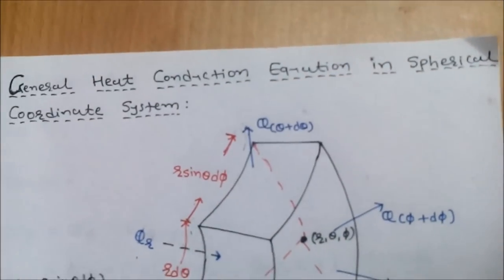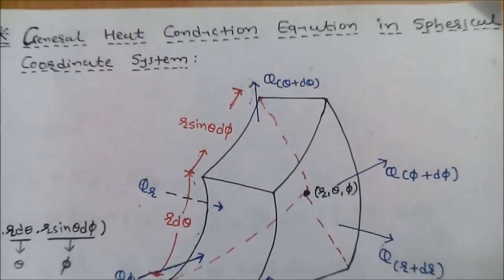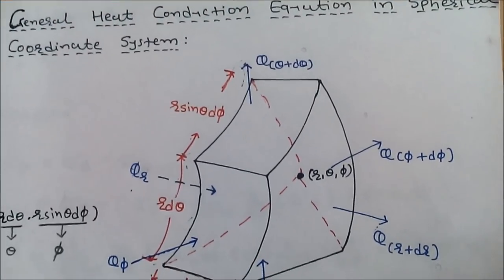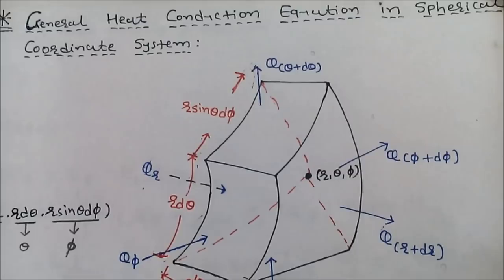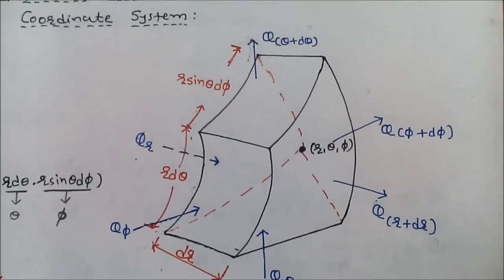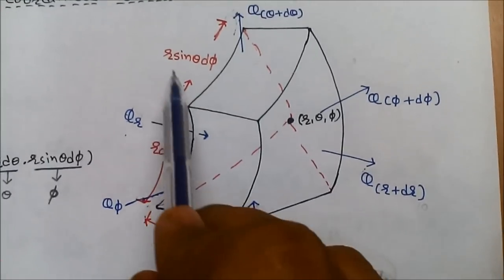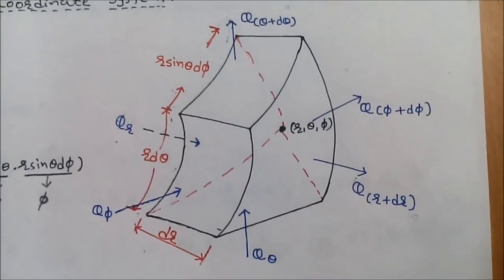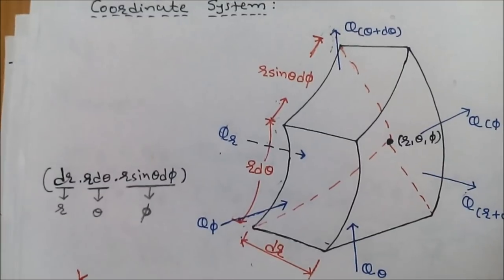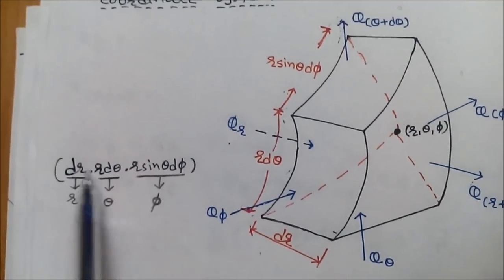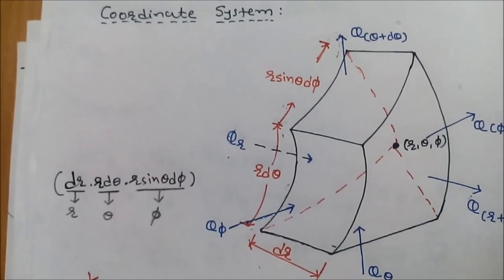Hello friends, today we discuss the general heat conduction equation in the spherical coordinate system. As shown in the figure, in the spherical coordinate system, the total elemental volume is dr into r·dθ into r·sinθ into dφ.